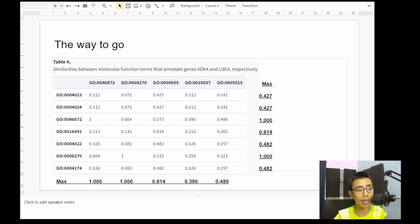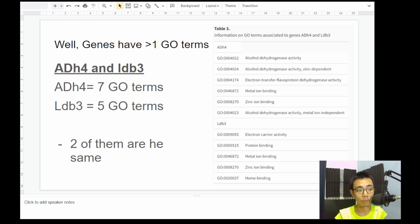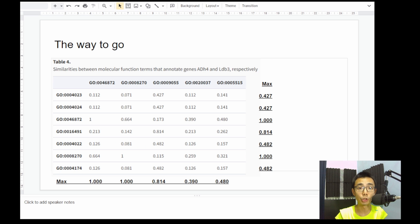which is why GO semantic similarity came out with the process of calculating the individual semantic similarity of each GO term. So which is what you see on this matrix right here. So on the top, you can see there's five different GO terms annotated from the LDB3 gene. And on the vertical, you can see seven different GO terms annotated from the ADH4 gene. So every single relationship between the two GO terms are calculated.